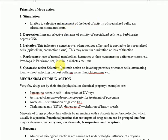For example, in Parkinson's disease, dopamine is reduced. Dopamine can't go directly to the brain — it can't cross the blood-brain barrier — so levodopa is used. It will be replaced by dopamine. Similarly, in diabetes, we use insulin as a replacement.